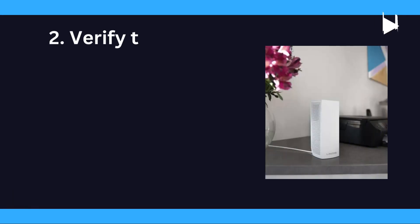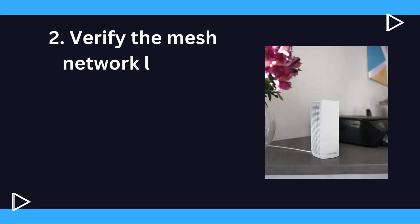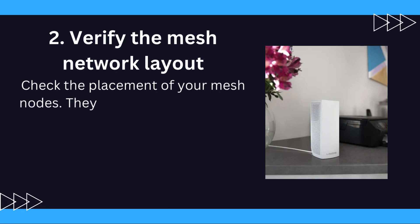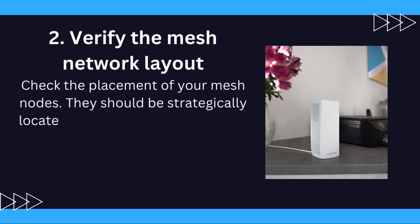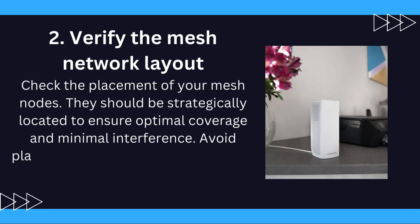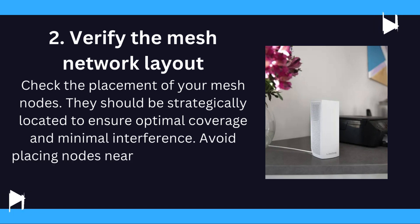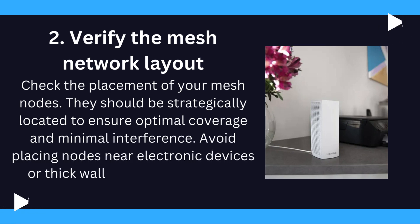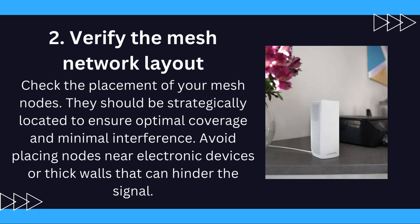2. Verify the Mesh Network Layout. Check the placement of your mesh nodes. They should be strategically located to ensure optimal coverage and minimal interference. Avoid placing nodes near electronic devices or thick walls that can hinder the signal.